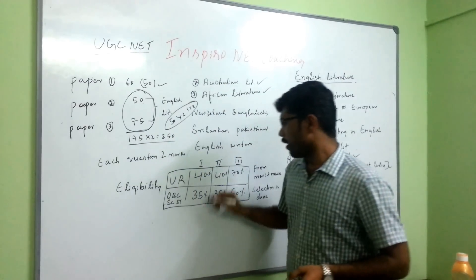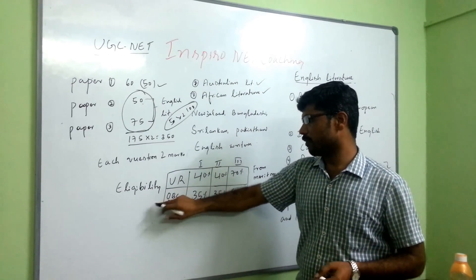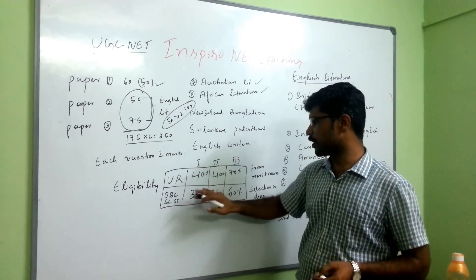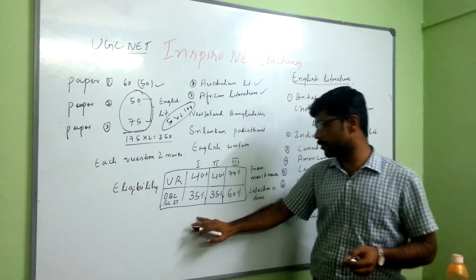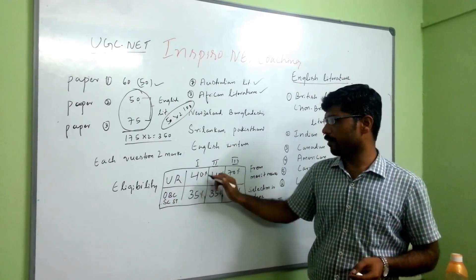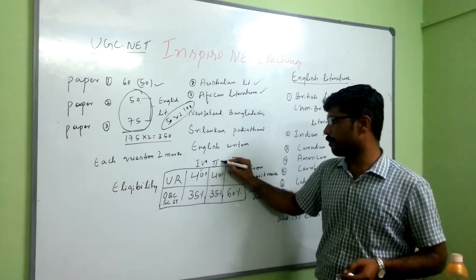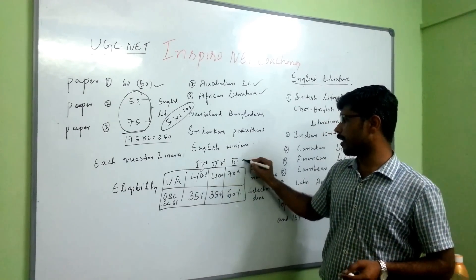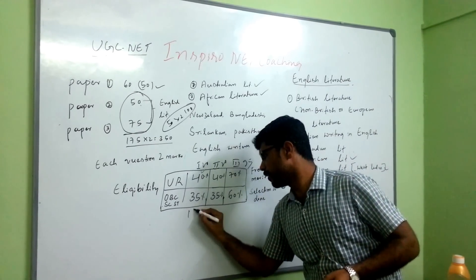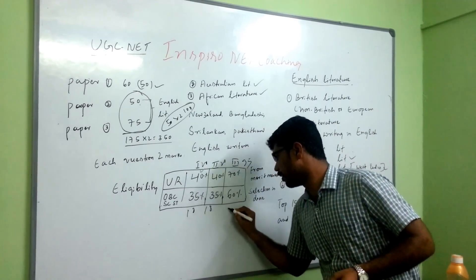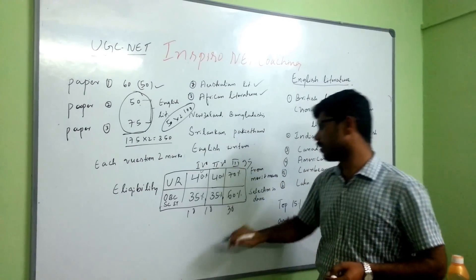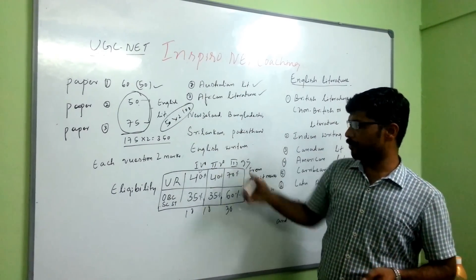In that, according to UGC norms, we have to get eligible in first and second and third paper respectively. For unreserved category, 40% means 20 questions. And in second paper, 20 questions, here 35 questions, likewise 18, 18 and 30 questions. We need to get in all the three papers for OBC.